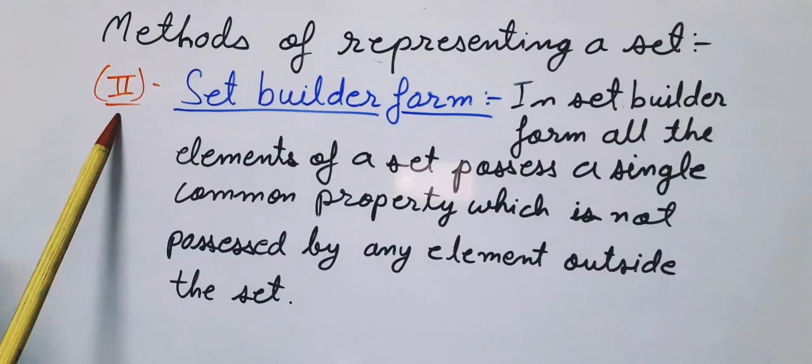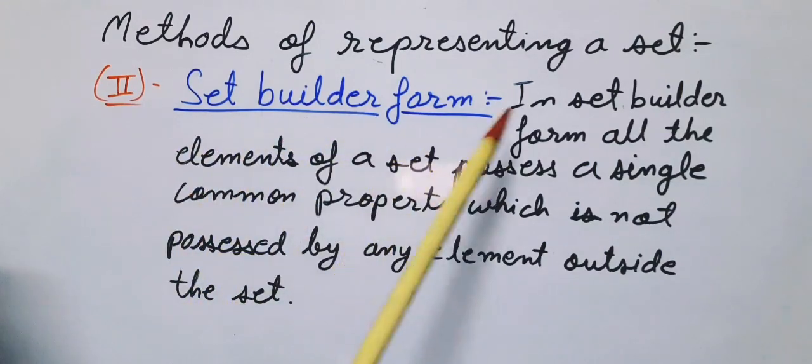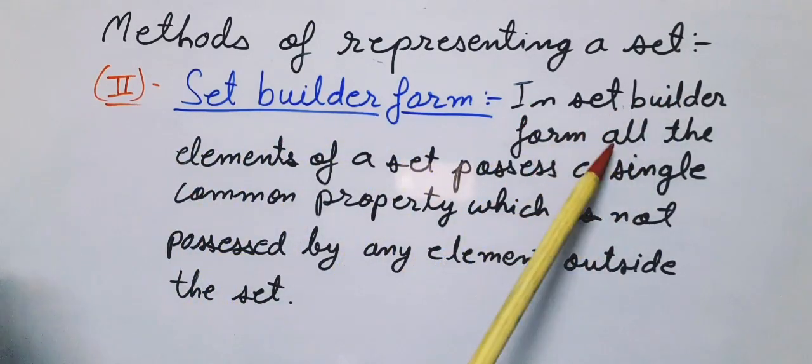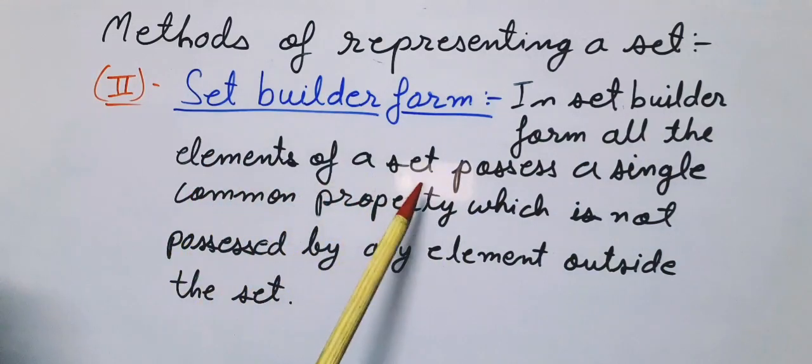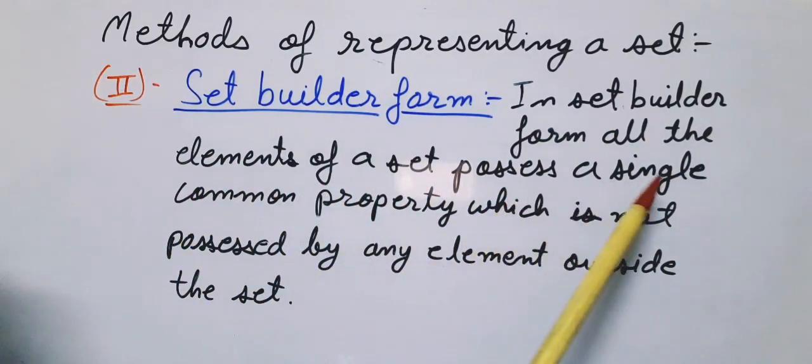Now we will discuss the second method, that is set builder form. In set builder form, all the elements of a set possess a single common property which is not possessed by any element outside the set.